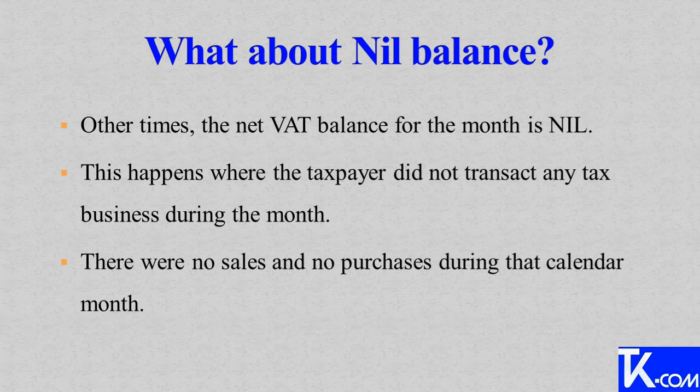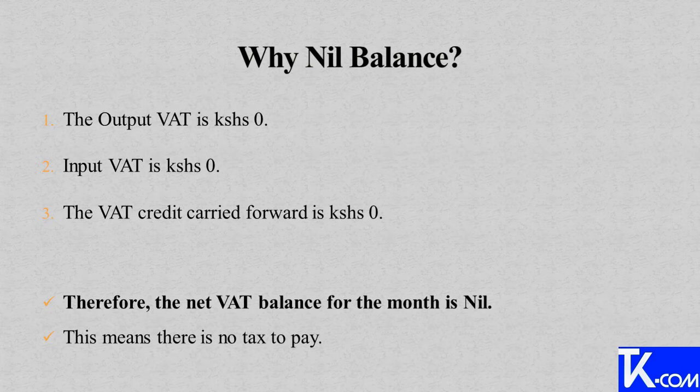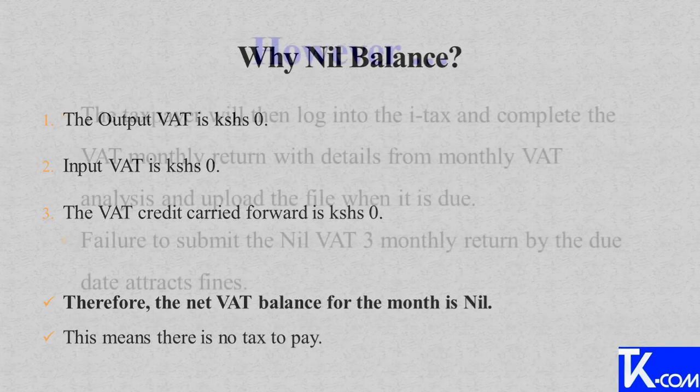Now, what about nil balance? Sometimes the net VAT balance for the month is nil. This happens where the taxpayer did not transact any business during the month — there were no sales and there were no purchases during that calendar month. This is because the output VAT is zero, input VAT is zero, and the VAT carried forward is zero. Therefore, the net VAT balance for the month will automatically be zero, meaning there is no tax to pay.